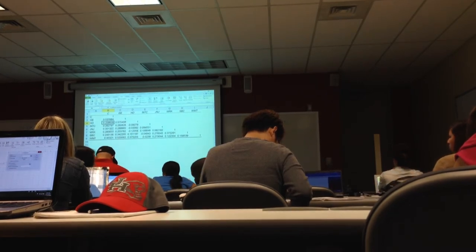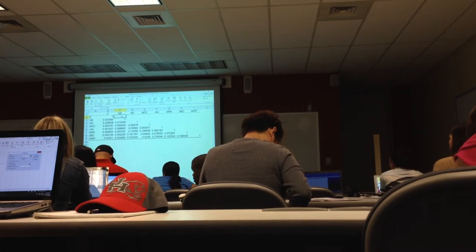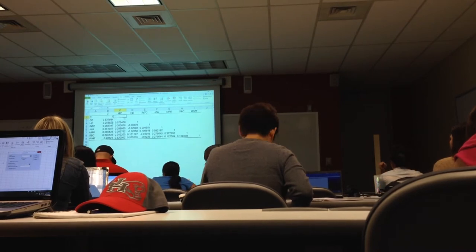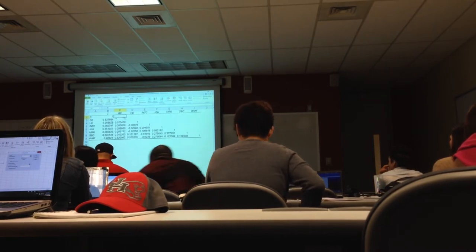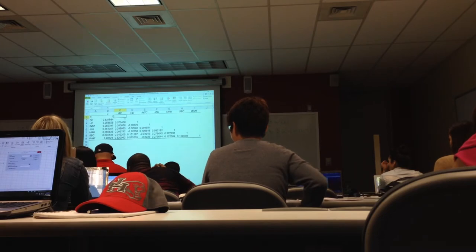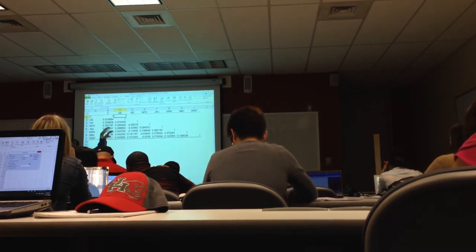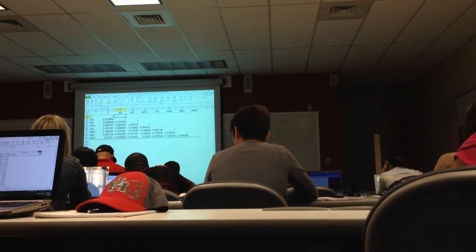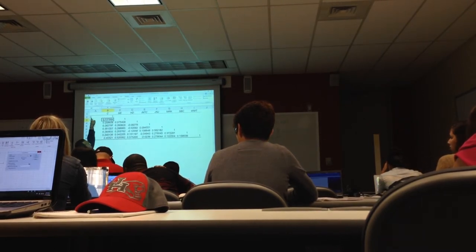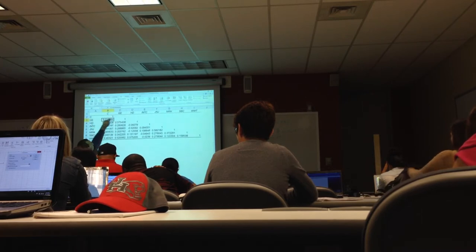Why do you think this one is blank? What should this number be — the correlation between GE and Citi? The reason these are blank is because all diagonal elements are exactly the same. The correlation between Citi and GE is the same as saying correlation between GE and Citi, so this number and this number should be exactly the same.